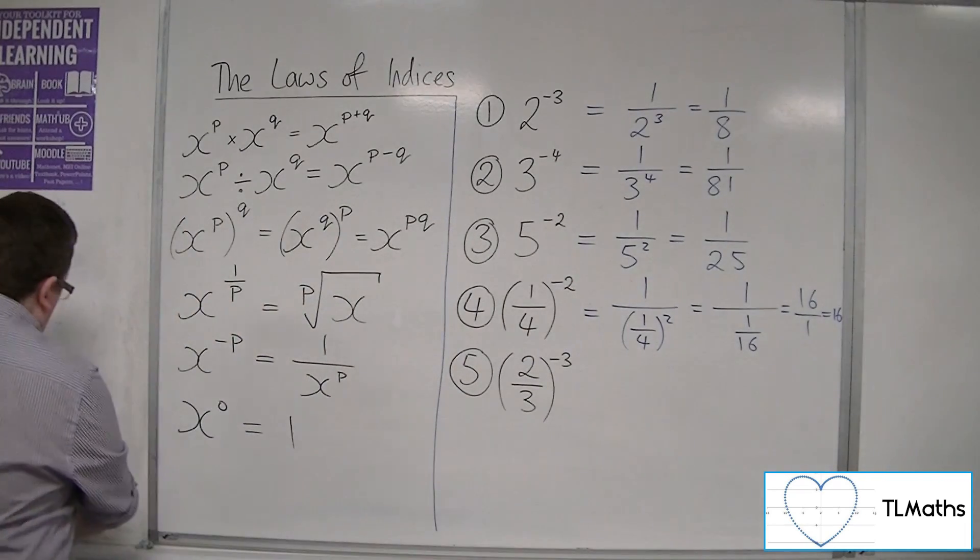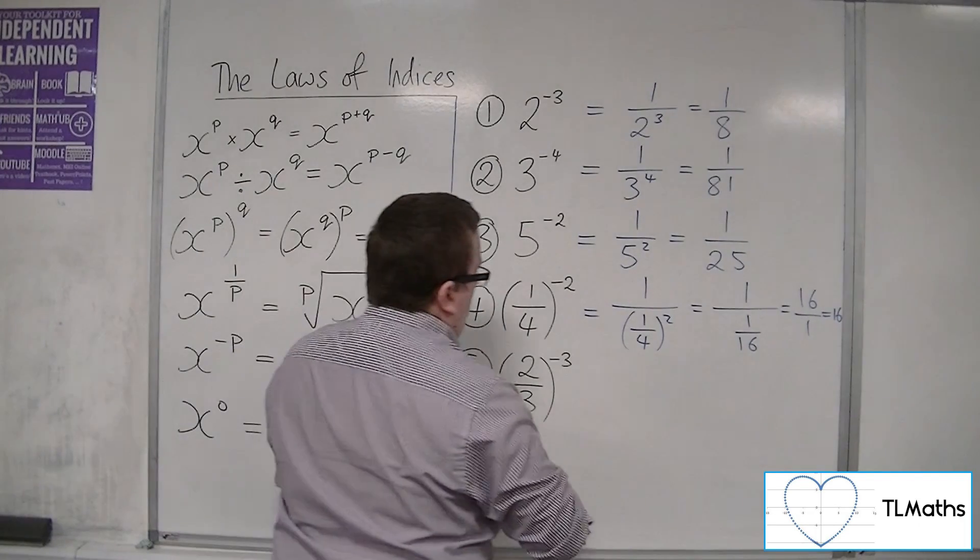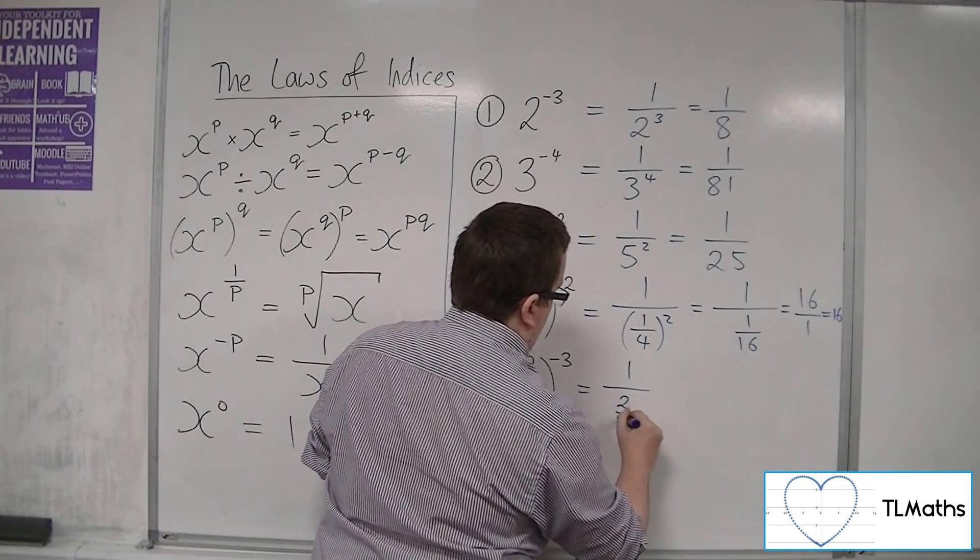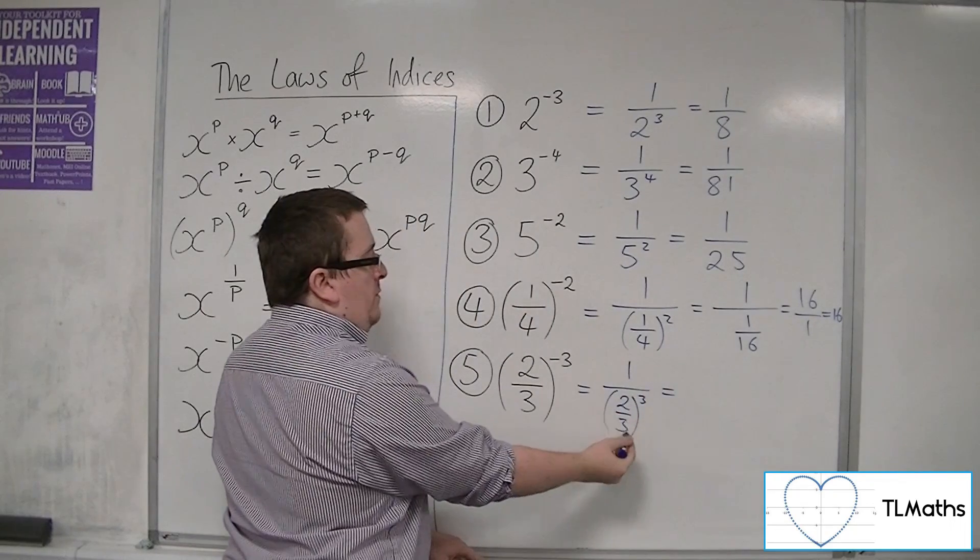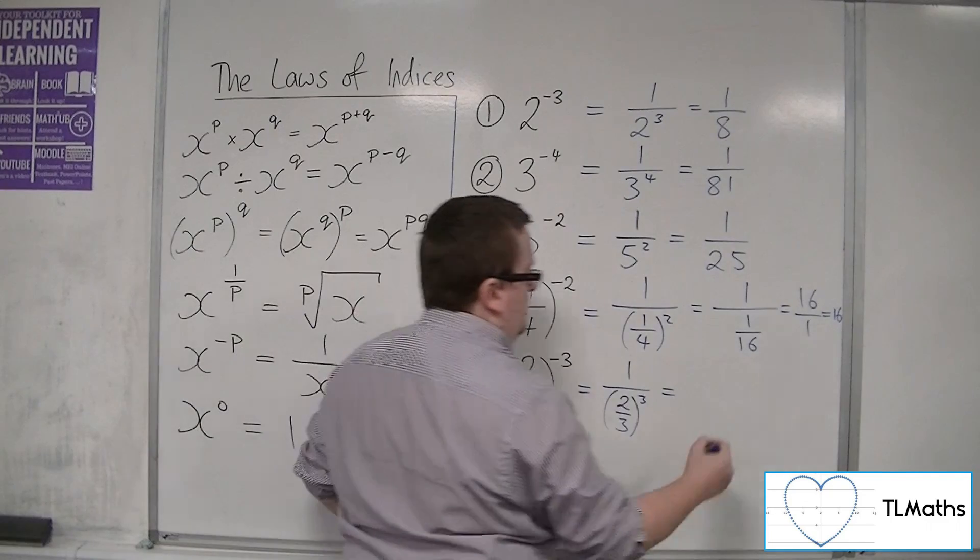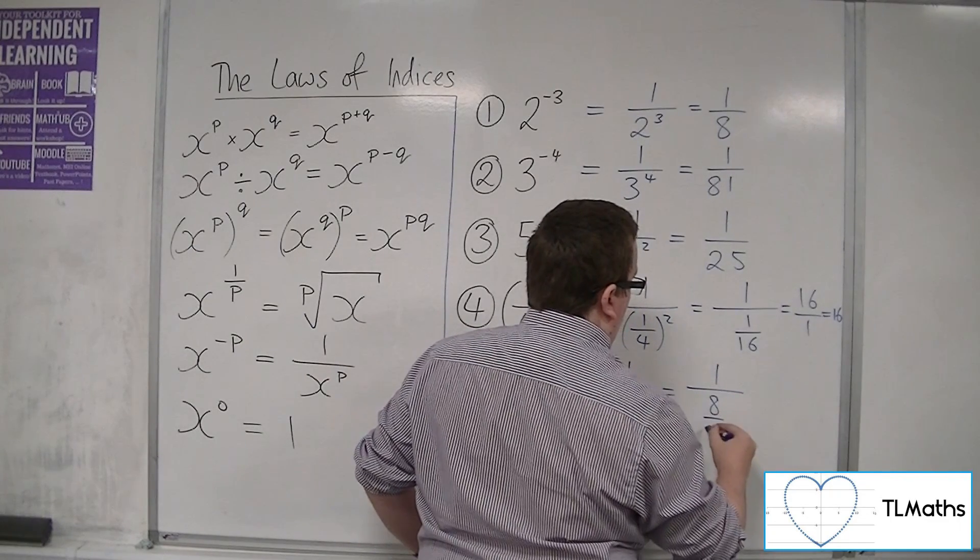So if we've got 2 thirds to the minus 3, then we have 1 over 2 thirds cubed. We're going to cube the numerator, cube the denominator. So we've got 1 over 2 cubed, which is 8, 3 cubed, which is 27.